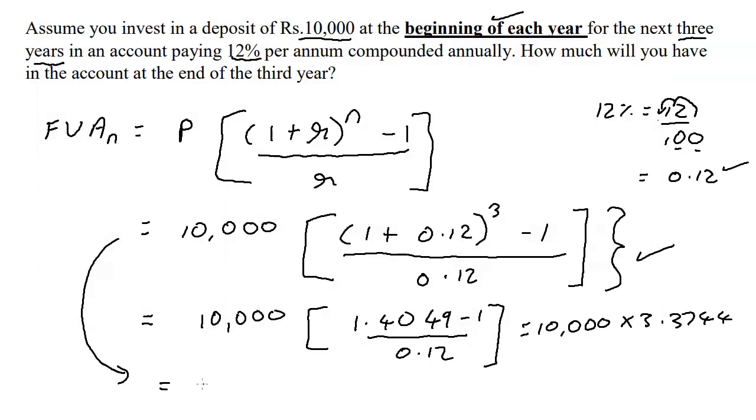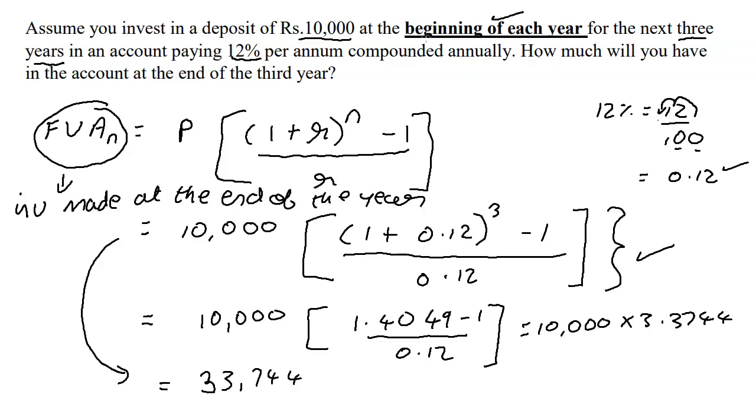So final answer 33,744. But when we are calculating future value annuity, it is assuming that investment is made at the end of the year. In this question they're saying it is done at the beginning. Because they're saying it's done at the beginning, that doesn't change the fact that it's happening every year for three years.